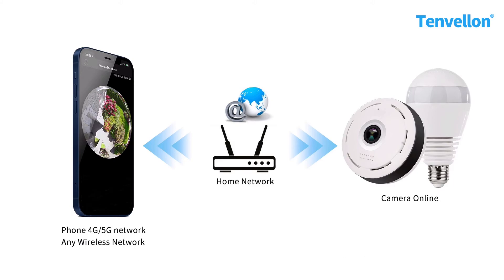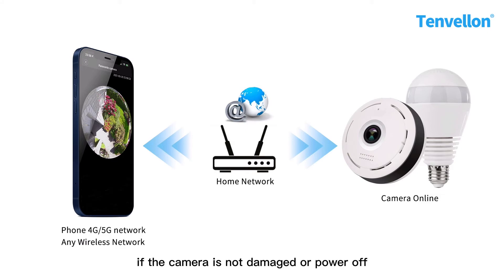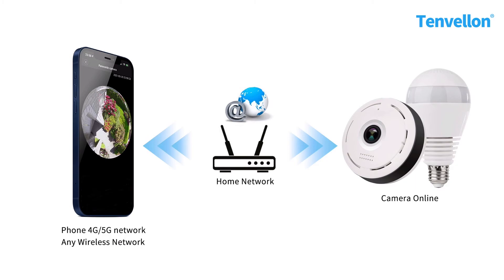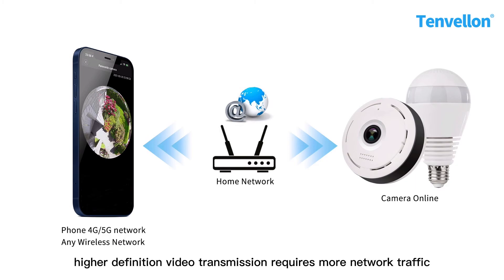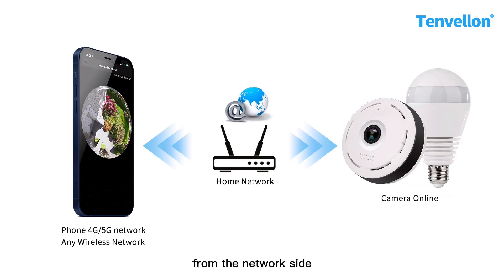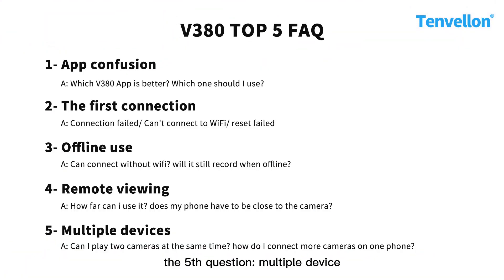When a bad guy wants to break in, I can receive an alarm message immediately. Some people fail when trying to watch remotely — in that case, if the camera is not damaged or powered off, the issue usually belongs to unstable network connections. Higher definition video transmission requires more network traffic, so unstable and low-speed networks will affect the connection, and you should start troubleshooting from the network side.